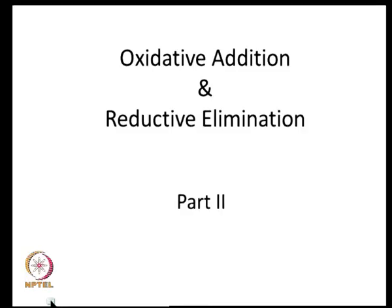Oxidative addition and reductive elimination are two key reactions in organometallic chemistry, especially in transition metal organometallic chemistry. It is important that we spend some time understanding the conditions under which oxidative addition occurs and how we can have reductive elimination in a catalytic cycle.